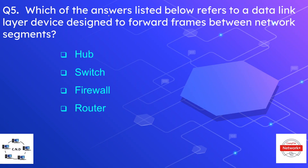Question number five is: which of the following refers to a data link layer device designed to forward frames between network segments? We have to search for the layer two device. The options are hub, switch, firewall, and router — and the correct option is switch. Hub is layer one, router is layer three, and firewall is layer four or layer seven in the case of an application firewall.